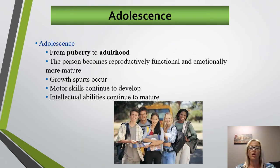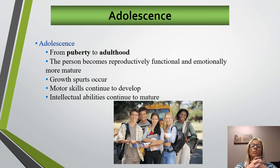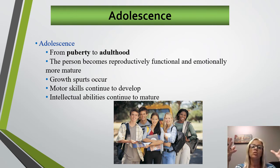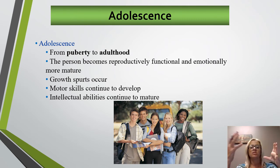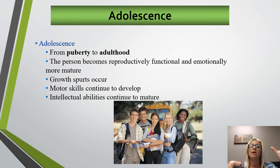Bladder and bowel controls are established in early childhood, along with more muscular control and coordination. Once puberty occurs, we enter adolescence. Puberty occurs between childhood and adolescence as a transition stage until adulthood. The person becomes reproductively functional and emotionally mature, with continued growth spurts, motor skill development, and intellectual development. Secondary sex characteristics begin to appear during puberty, and this occurs earlier for females than for males.